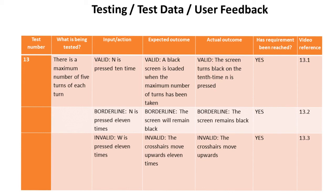This is typically a test plan. At a later stage the plan would be carried out, typically by someone independent of the person who wrote it, and what actually happened would be recorded in the actual outcome column. There may also be a variety of other columns, including the user's feedback, a statement of whether the test passed or failed or a requirement was met, any further action taken, or a link to evidence to prove the validity of the test or to show how the test failed.